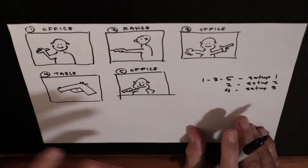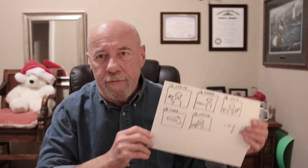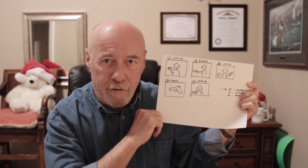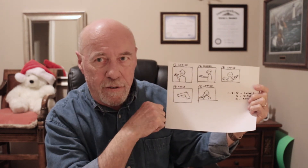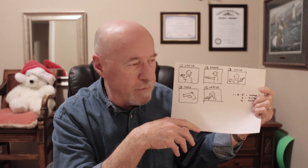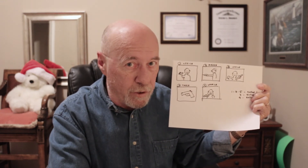So now that we know what our scenes are, we can come up with our shot list. We have our storyboard completed, and as we can see, we have 5 scenes that comprise this entire video. We start out in the office with a narrator that tells what the video is about. Then we have a range scene where we shoot the gun.